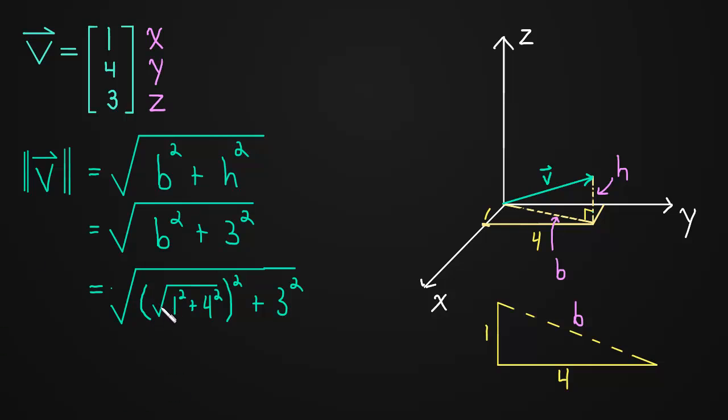Something really nice just happened. Look, we have a square root being squared, and so that square root just simply goes away. So this whole thing simplifies to the square root of one squared plus four squared, because that square root went away, plus three squared.